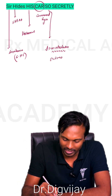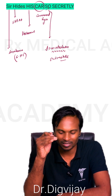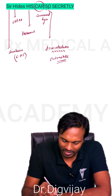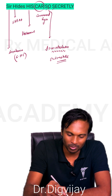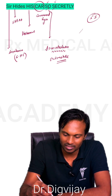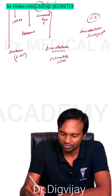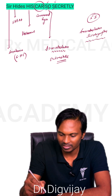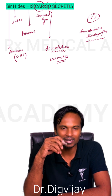The somatostatin analog octreotide is required in treatment, represented by the letter 'O' after 'S' in the mnemonic. Additionally, somatostatin scintigraphy is one of the important modalities for the diagnosis of carcinoid syndrome.